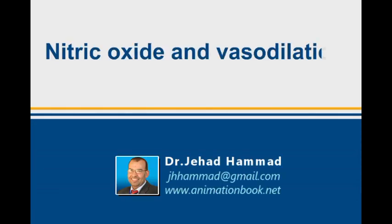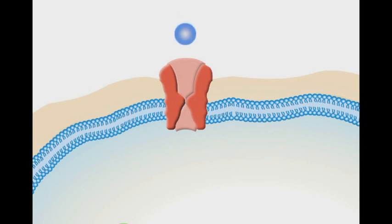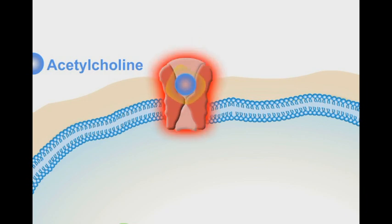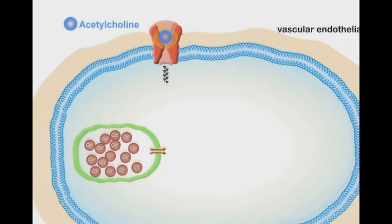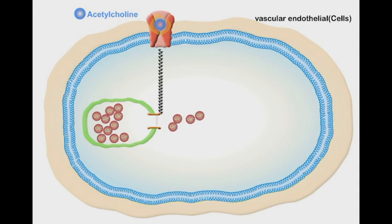Nitric oxide and vasodilation. Binding of acetylcholine to its vascular endothelial receptors triggers a cascade of reactions that result in excessive release of calcium ions from their indigenous storage sites.